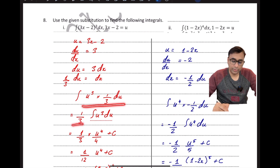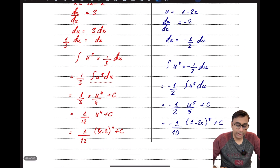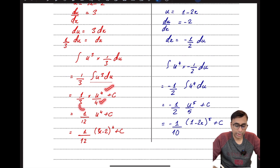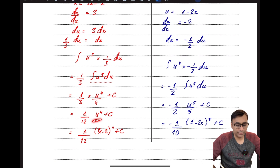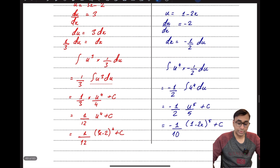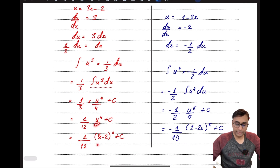I take the constant 1/3 outside and integrate u³ directly using the power formula, giving u⁴/4. Then 4 × 3 = 12, so the result is u⁴/12. Now I bring back the original variable: replacing u with (3x − 2) gives (3x − 2)⁴/12 + C.